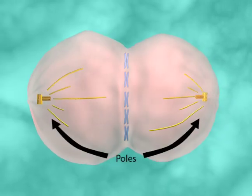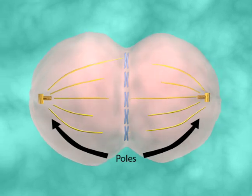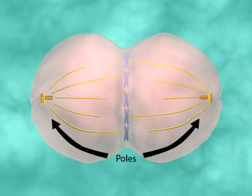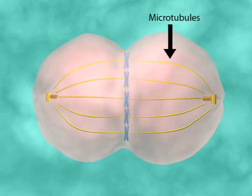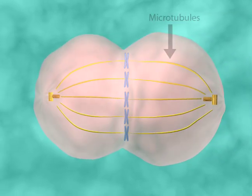In metaphase, chromosomes line up on the equator of the dividing cell. Microtubules emanating from two poles seek out the chromosomes, growing and shrinking randomly until they come into contact with a chromosome.